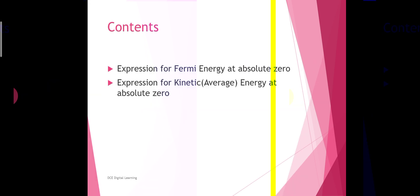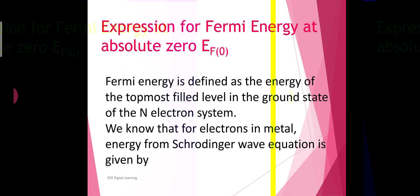The contents of this video are: expression for Fermi energy at absolute zero, and expression for average kinetic energy of electrons at absolute zero. Fermi energy is defined as the energy of the topmost filled energy level in the ground state of an n-electron system at absolute zero.